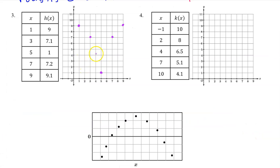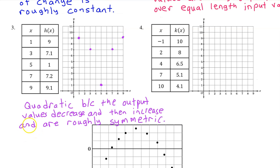Here's the scatterplot for number three. This is not a perfect match, but if we have to choose between linear, quadratic, and exponential, we have to go with quadratic because that's the only model that goes down and then back up again. To explain, we can say quadratic because the output values decrease and then increase, and are roughly symmetric.